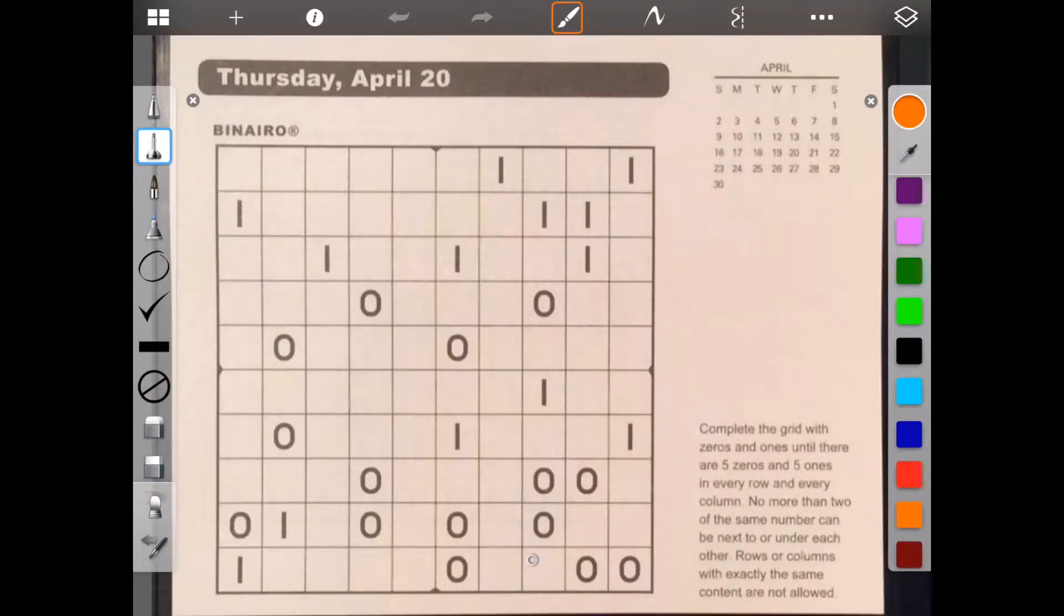Hello, welcome to Brain Games Calendar 2017. We're in week 16, day 4. We have Binary Row. Let's begin. Complete the grid with zeros and ones until there are five zeros and five ones in every row and every column. No more than two of the same number can be next to or under each other. Rows or columns with exactly the same content are not allowed.